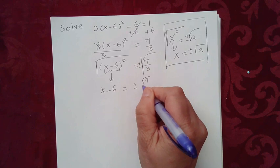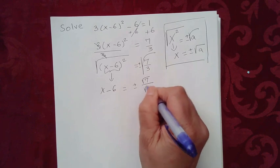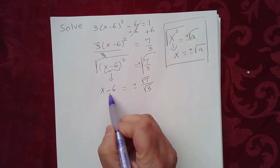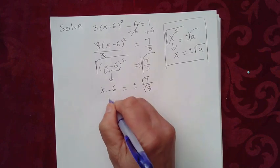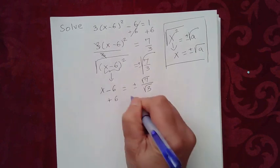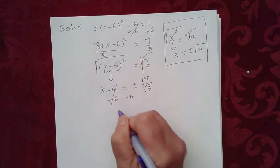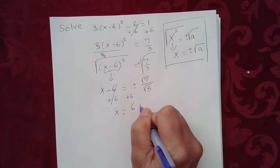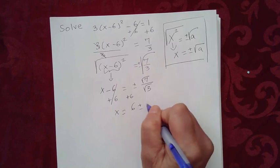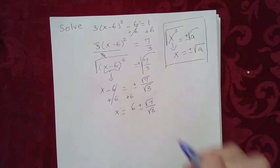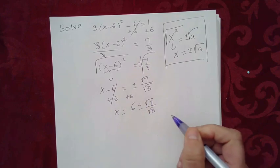You can separate this if you want. Now, solving for x, we need to add 6 on both sides. This cancels, and you get x equals 6 plus or minus square root of 7 over square root of 3.